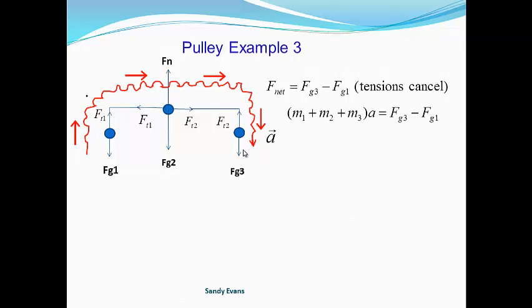Our F-net is our Fg3 minus our Fg1 because our tensions cancel. Notice that the normal force and the force of gravity from mass 2 are in a different plane than the acceleration, so they don't fall into the net force equation — they just negate each other. So dealing as a system, we have our system mass times our acceleration for our F-net equals the sum of our forces, Fg3 minus Fg1, the forces in that plane of the acceleration.